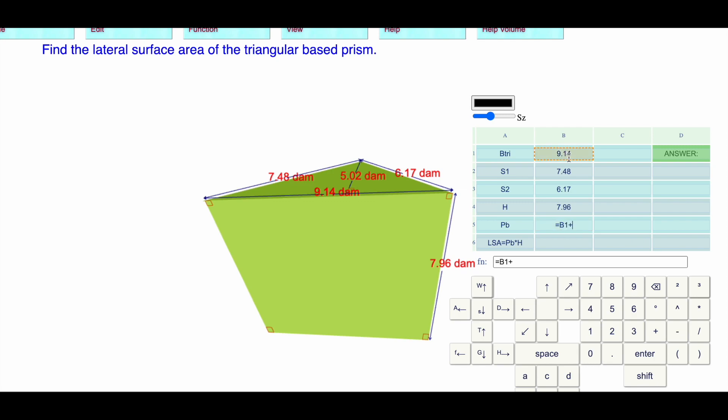Add up all the sides of the triangle. The lateral surface area is perimeter of the base times the height: 181.4084 decameters squared, because it's area.